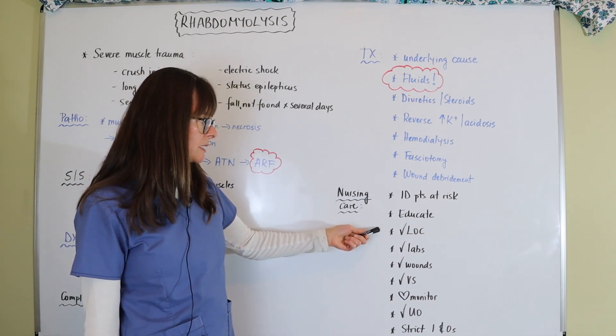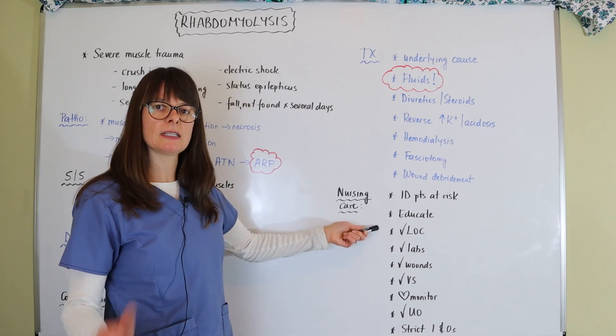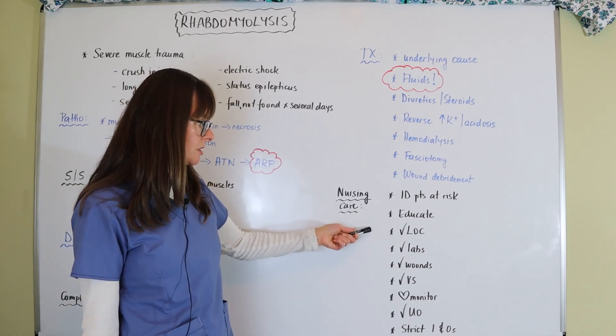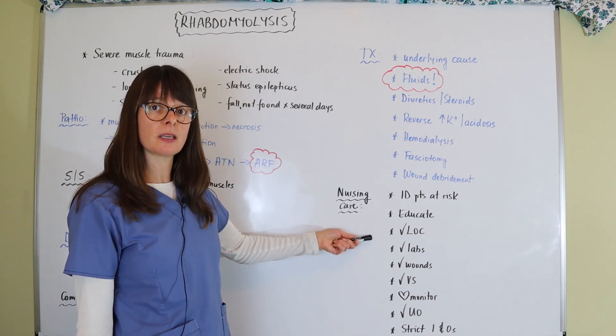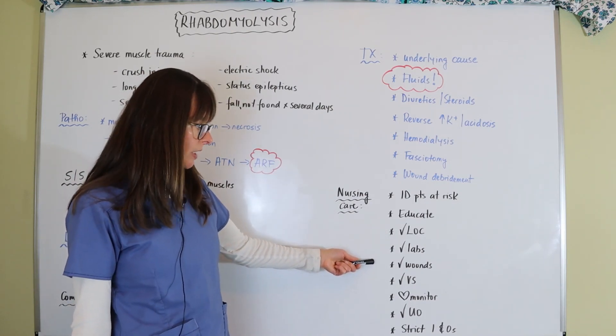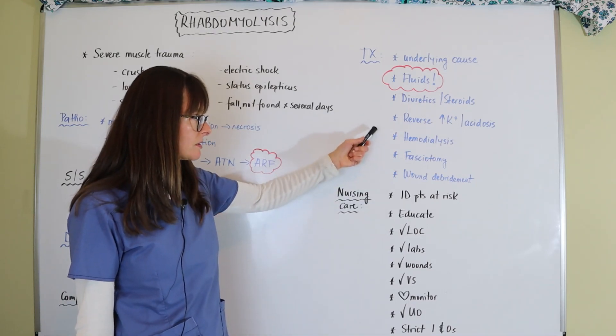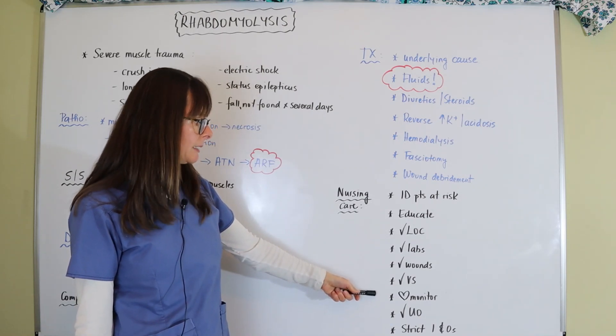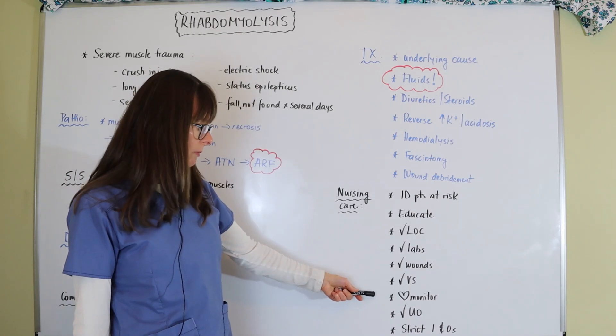Check level of consciousness because we know that anything that has to do with the kidneys not filtering everything out properly can lead to mental status changes. Certainly we want to check the labs and then trend those myoglobin, CK, and CKMB labs to make sure they're slowly coming down. Check the wounds, check vital signs for sure, especially with this risk for hyperkalemia. As we know, hyperkalemia can lead to dysrhythmia so we always want to have the patient on a heart monitor.